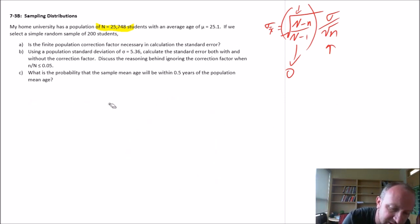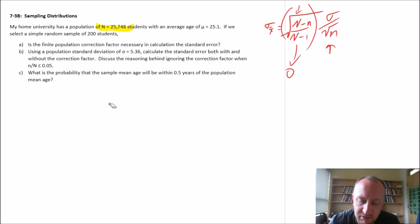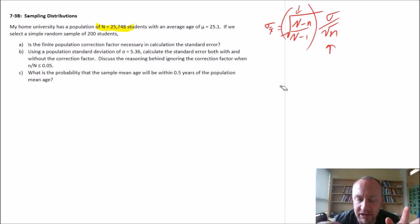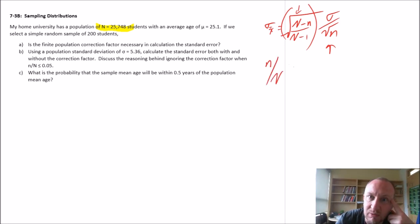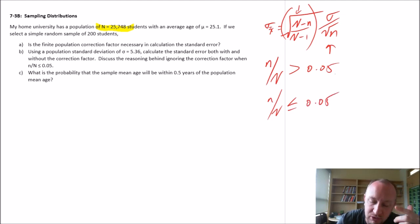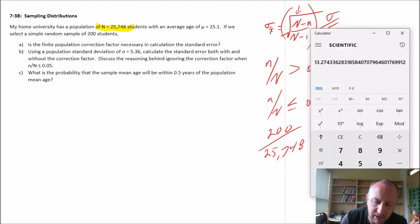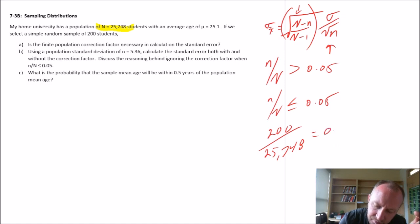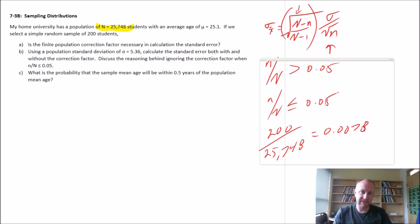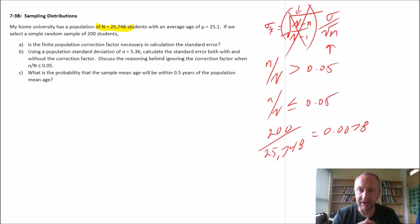Let's get into our exercise. First question: we've got our population of just under 26,000 students, with an average age of 25.1, and we take a sample of 200 students. Do we need to use the correction factor? We only need it if n/N is greater than 0.05. Putting in the numbers: 200 divided by 25,748 equals 0.0078. So our finite population, although finite, is sufficiently large that we don't need the correction factor. Answer: no.